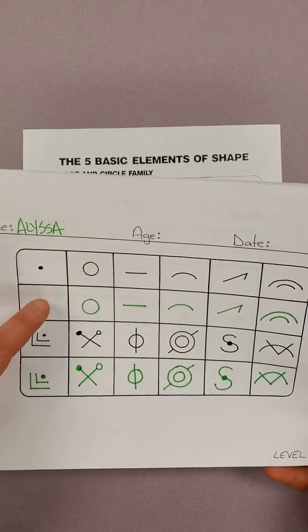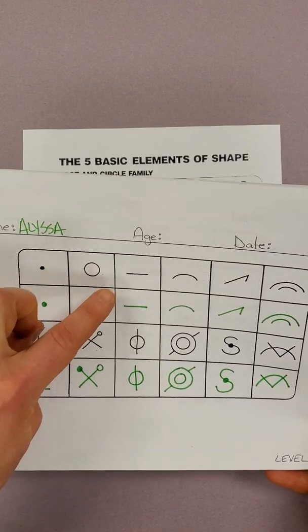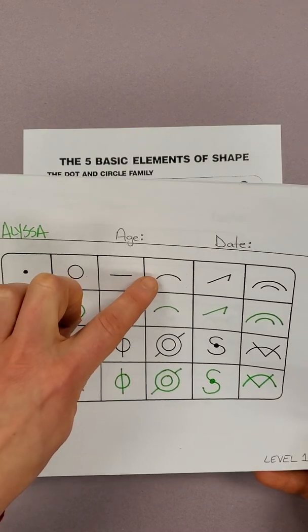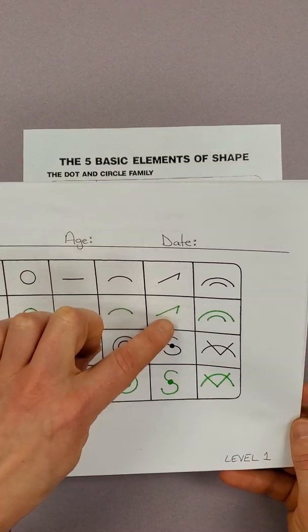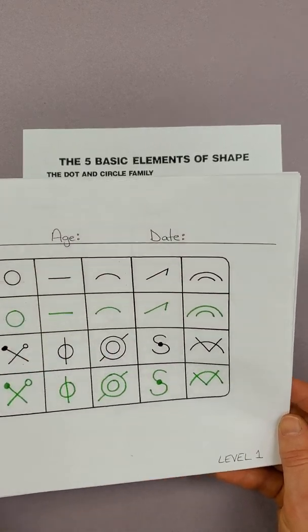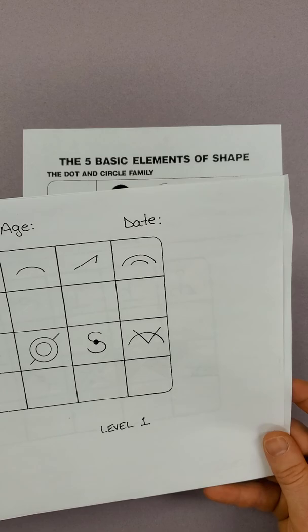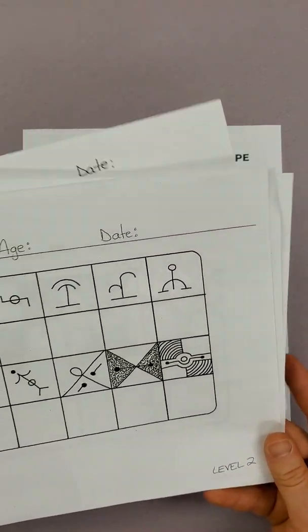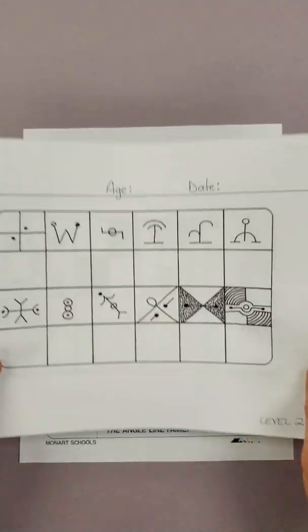There's a dot, I made a dot. There's a circle, made a circle. Straight line, straight line, curved line, curved line, angle line, angle line, oh my gosh, two curved lines. I echoed that down there. So just going to walk you through one or two of the level two exercises.